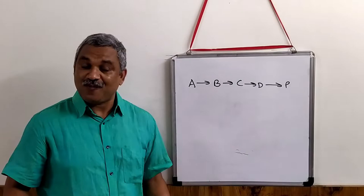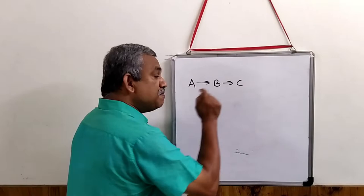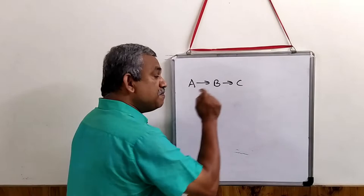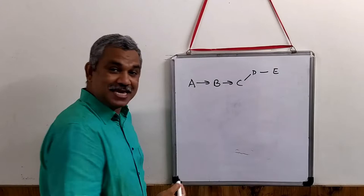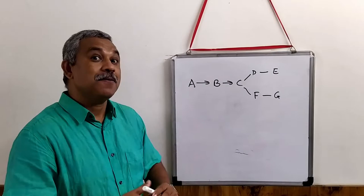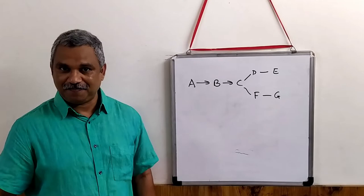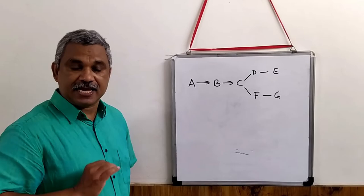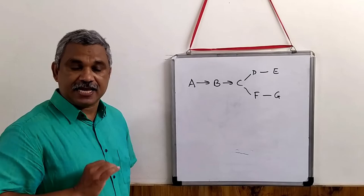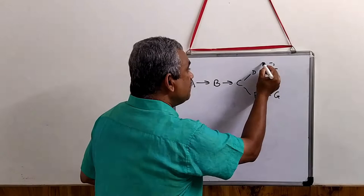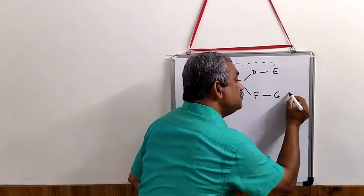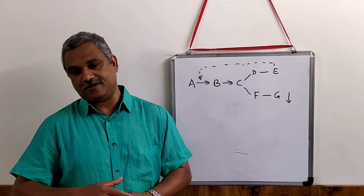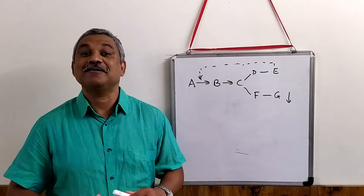There are many reactions in the cell which are not linear — they have branching. For example, an intermediate C can be converted to D and D to E; similarly, C can be converted to F and F to G. From here, a splitting occurs, and two final products are being formed. The problem is if you apply simple feedback inhibition — say E is inhibiting A — then the concentration of G will decrease, which should not happen. So how do we regulate this branched pathway?